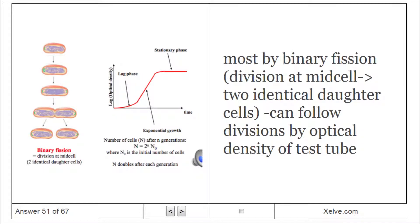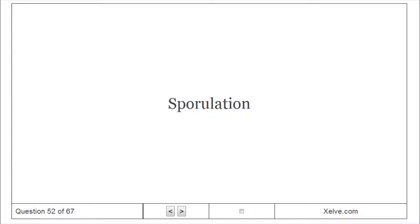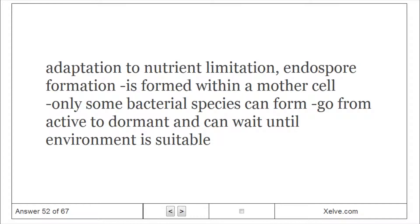Growth and division: most bacteria divide by binary fission, which can be followed by measuring optical density of a test tube. Sporulation is an adaptation to nutrient limitation. Endospore formation occurs within a mother cell in only some bacterial species, allowing them to go from active to dormant and wait until the environment is suitable.